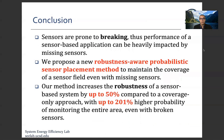As a conclusion, it's important to know that sensors are prone to breaking down, and performance can be impacted very heavily by missing sensors. To solve this problem, we propose a new robustness-aware probabilistic sensor placement method. We show that this model increases the robustness of a sensor-based system by up to 50% compared to coverage-only approaches, and up to 201% higher probability of monitoring the entire area even with broken sensors.